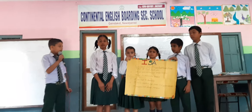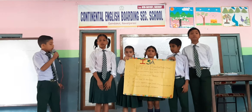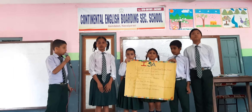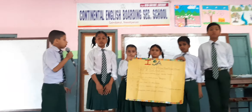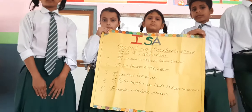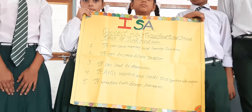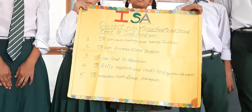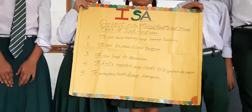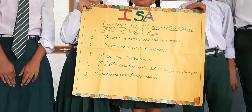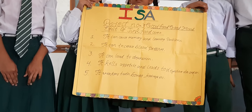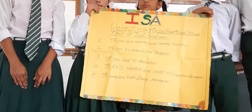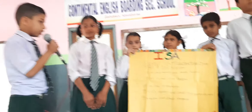Now I would like to read out the effect of child food which we have written here. Number 1, it can cause memory and learning problems. Number 2, it can increase blood pressure. Number 3, it can lead to depression. Number 4, it gives a click and leads to digestive disorders.